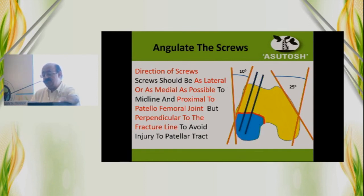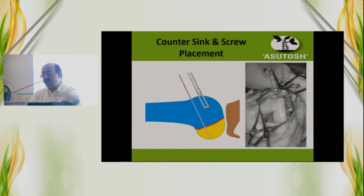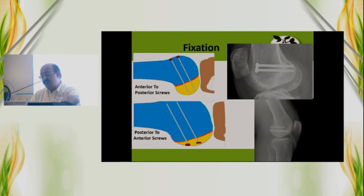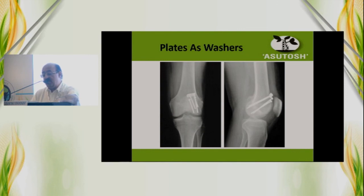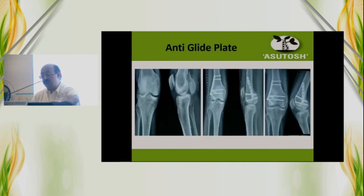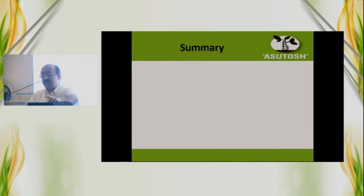Remember these screws would not go vertical — they go parallel to the lateral surface, anterior to posterior. But if the fragment is small, posterior to anterior screws should be used. Herbert or headless screws can be used, and longer ones are available. A plate can be used as a washer in osteoporotic fractures, and antiglide plates may be used in the case of shear fractures.